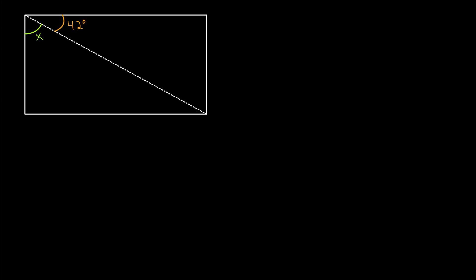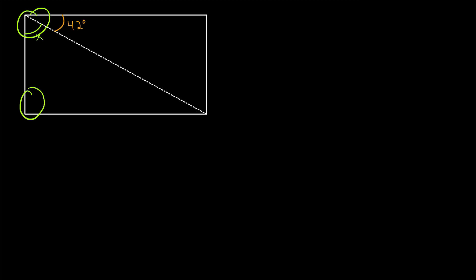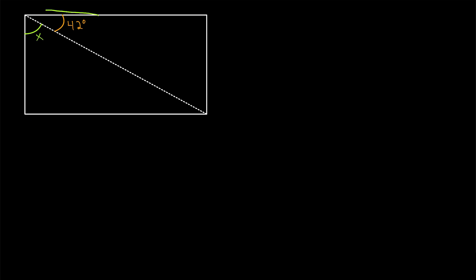Here we have a diagonal of the rectangle that's cutting this angle into two pieces. One piece is 42 degrees and the other piece is x, and we want to find x. Remember, every angle of a rectangle — this angle, this angle, this angle, and this angle — they're all right angles. They all have a measure of 90 degrees. In this case, these two smaller angles are called complementary, because together they form a right angle.